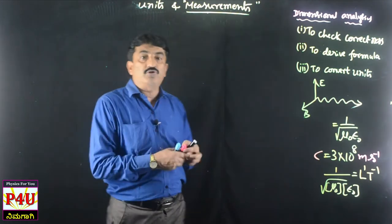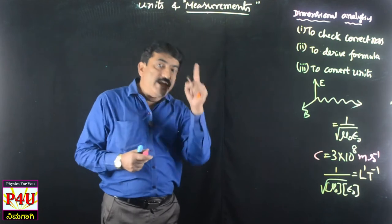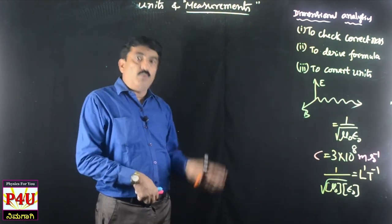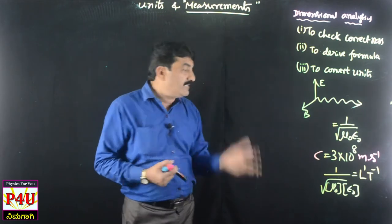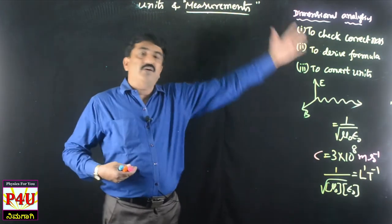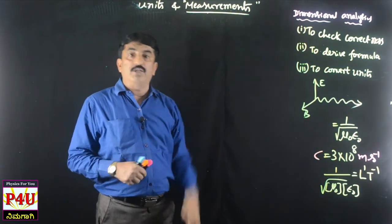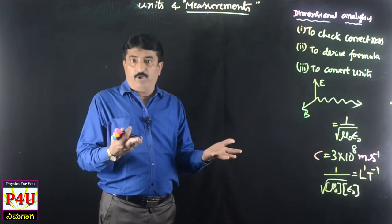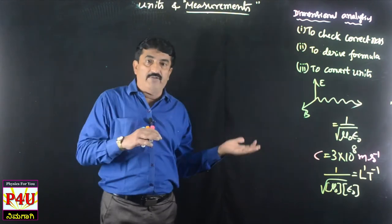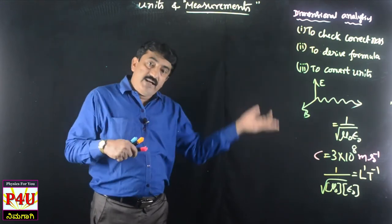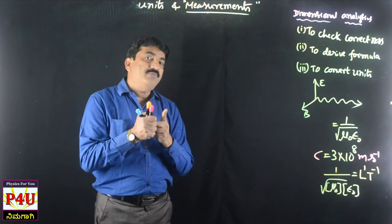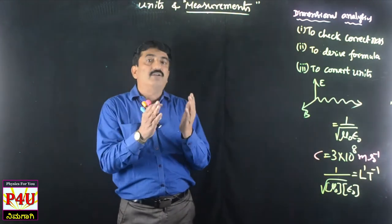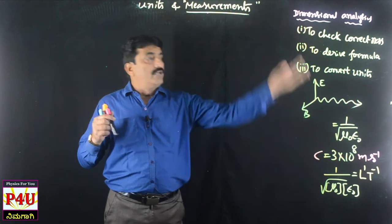Electromagnetic waves are generated through vibrating electric and magnetic fields. This concept led to radio waves and radar — the whole field of communication is totally based on Maxwell's theory. Physics makes our life so easy. Now, let us look at the dimensions and their applications with examples.